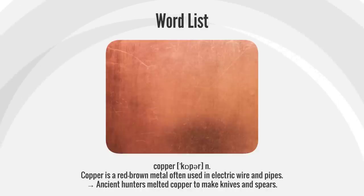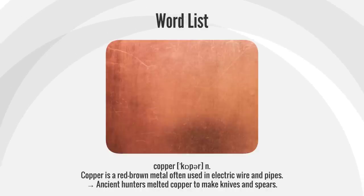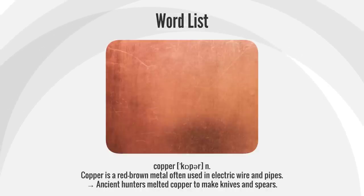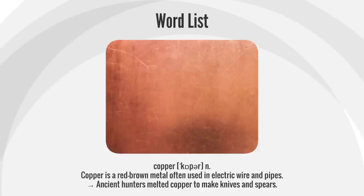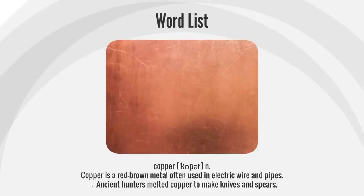Copper. Copper is a red-brown metal often used in electric wire and pipes. Ancient hunters melted copper to make knives and spears.